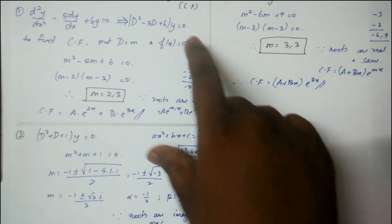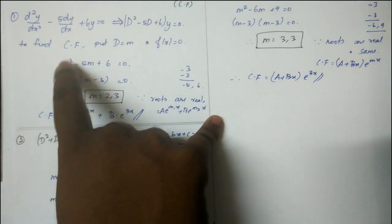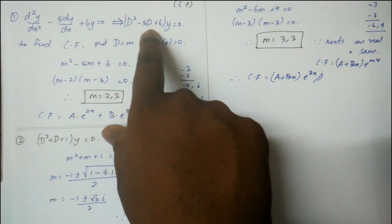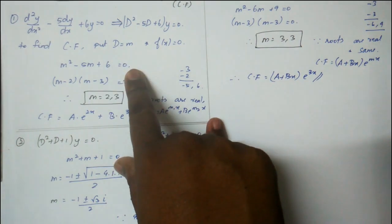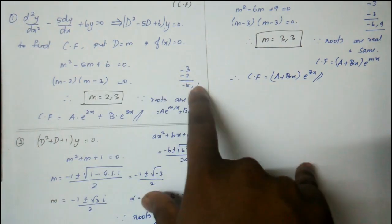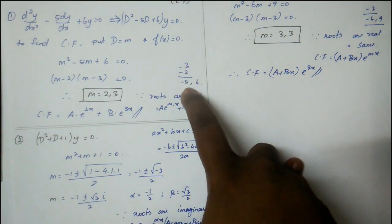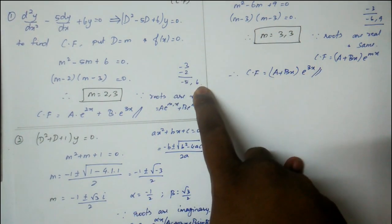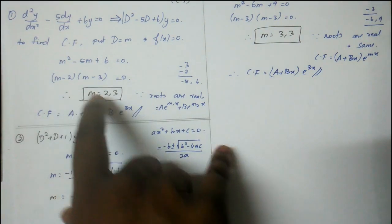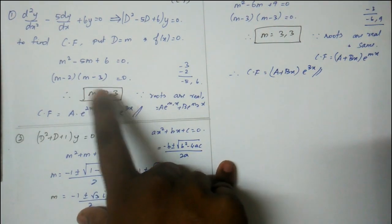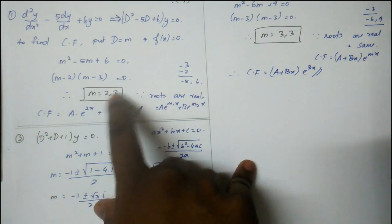Substitute to get m² - 5m + 6 = 0. Factor this as (m-3)(m-2), so the product is -5 and sum gives -6.